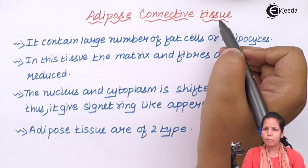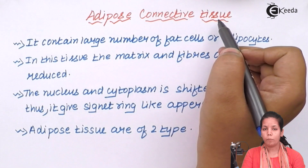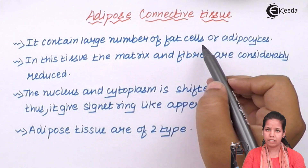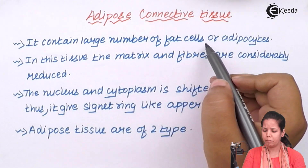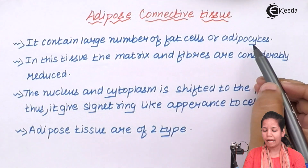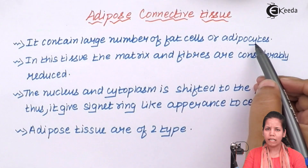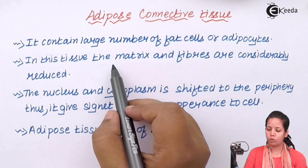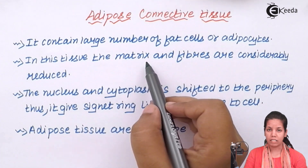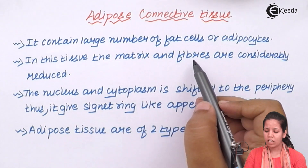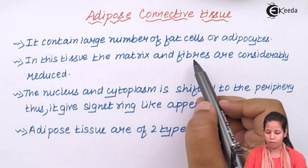Adipose connective tissue basically contains a large number of fat cells, or you can simply say adipocytes. Being composed of a large number of fat cells, these tissues have matrix as well as fibers which are considerably reduced in number.